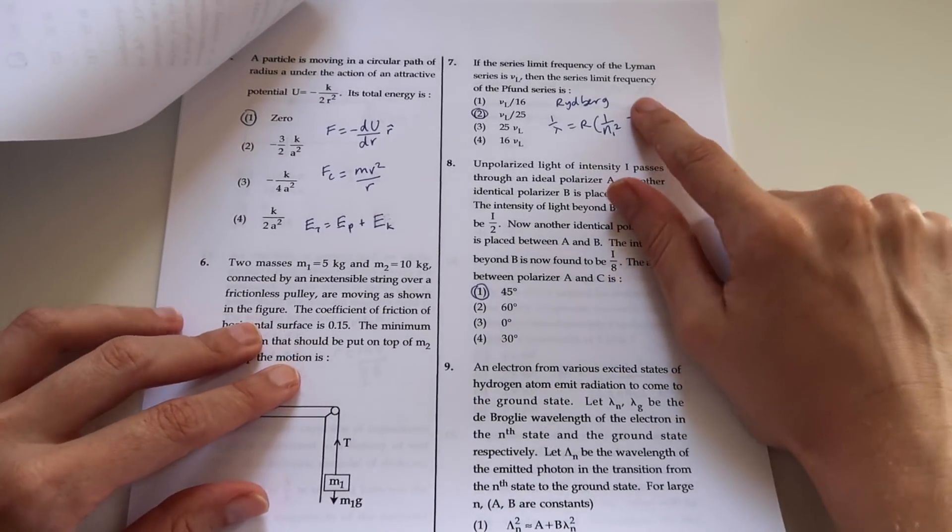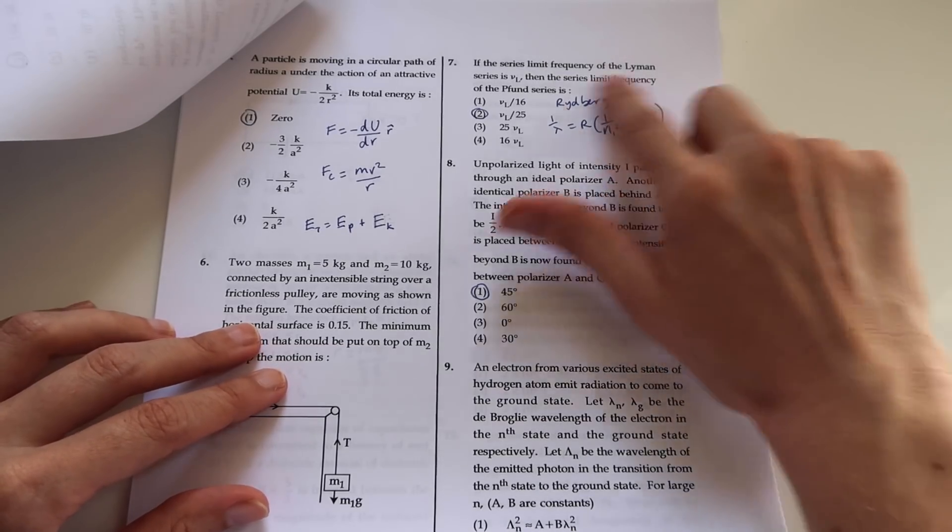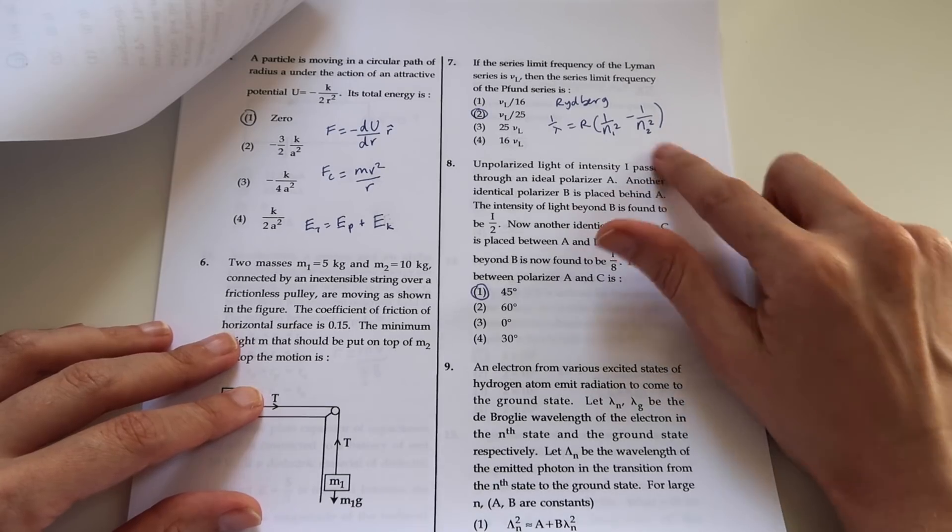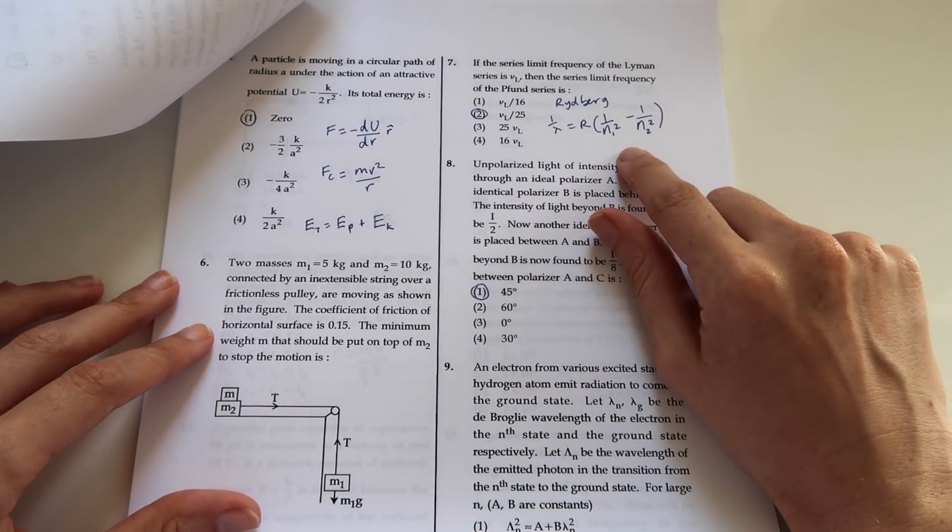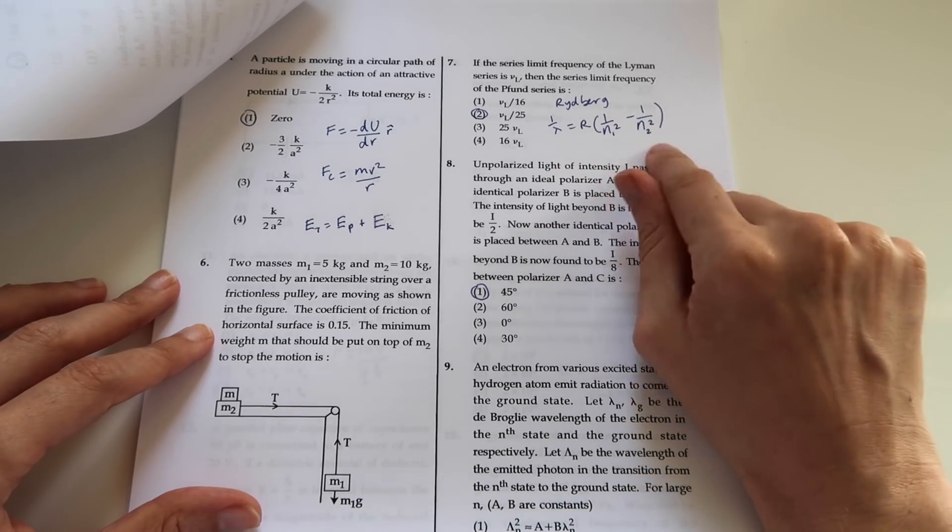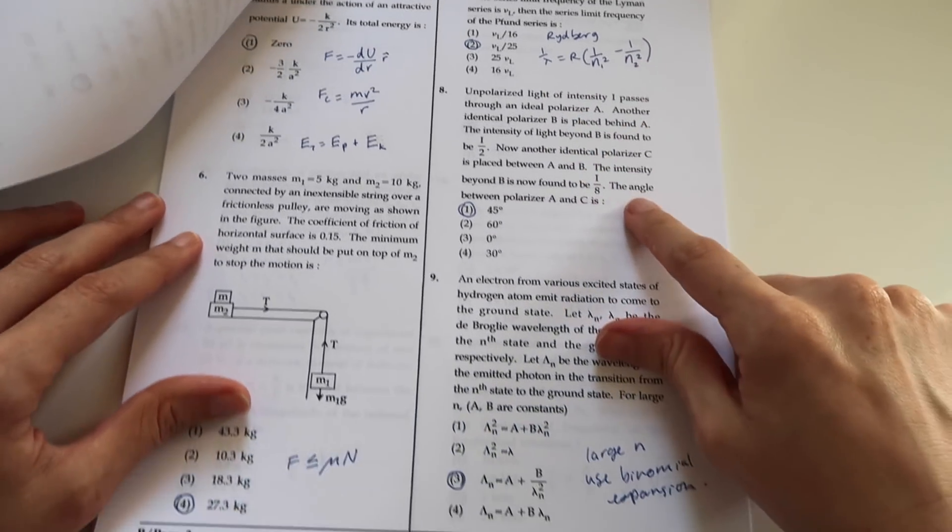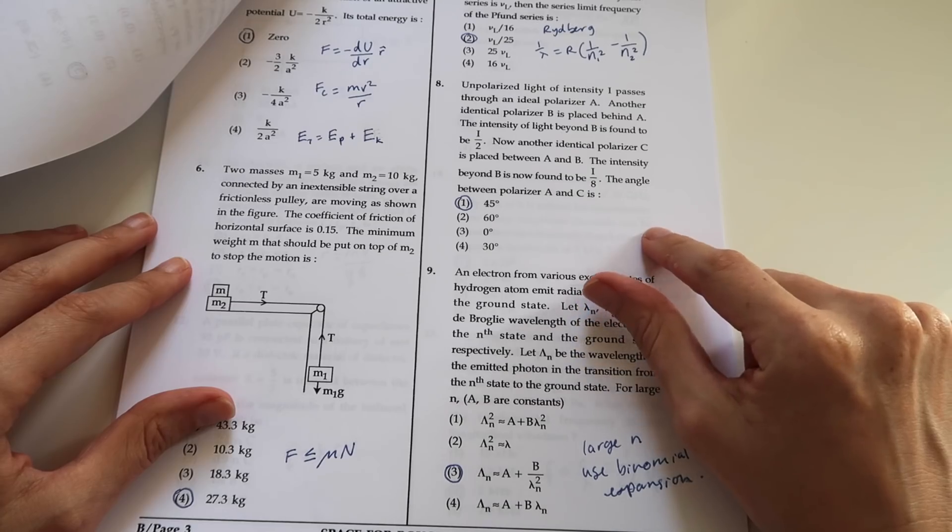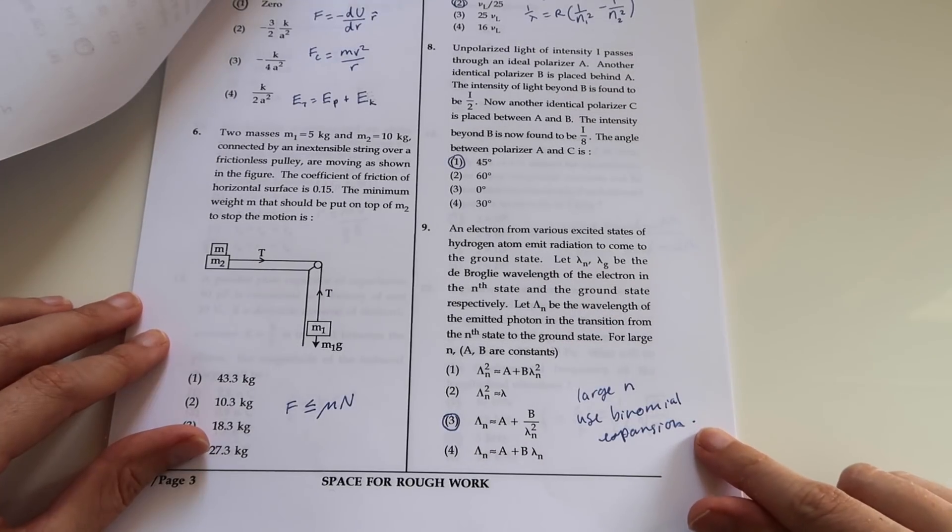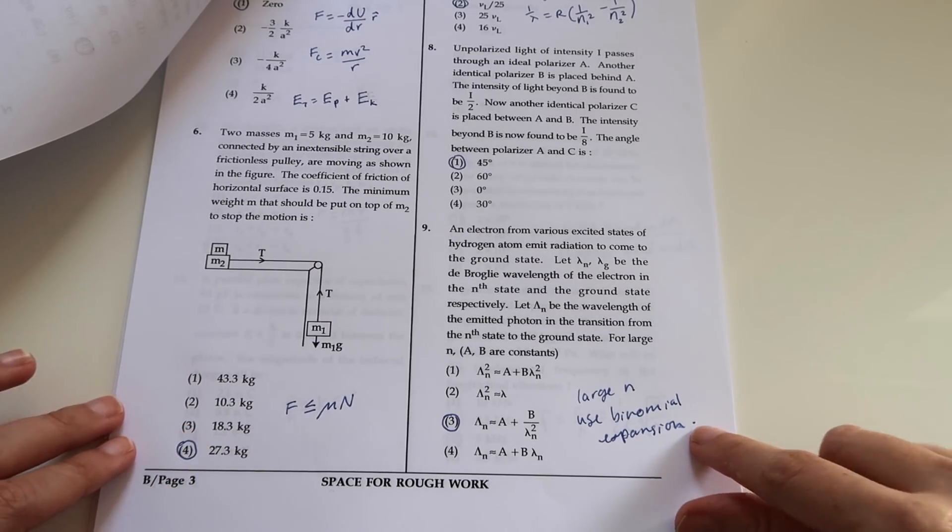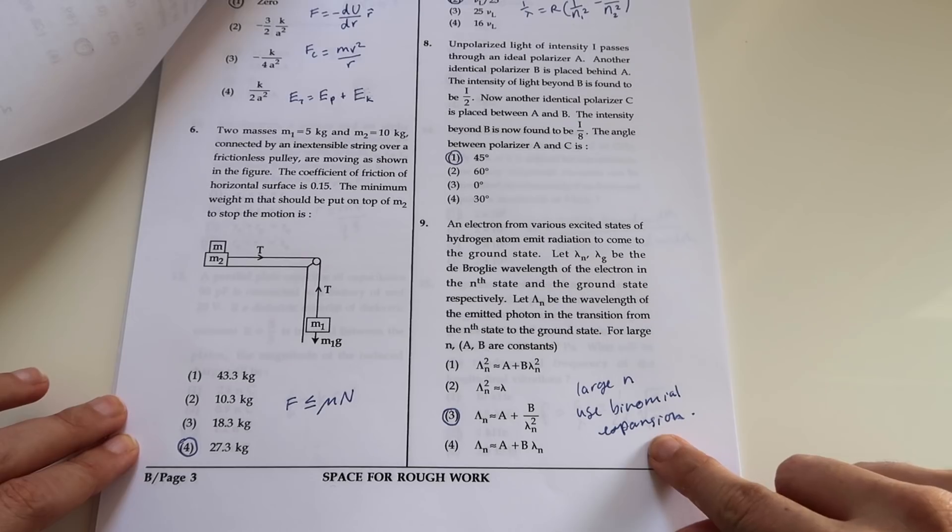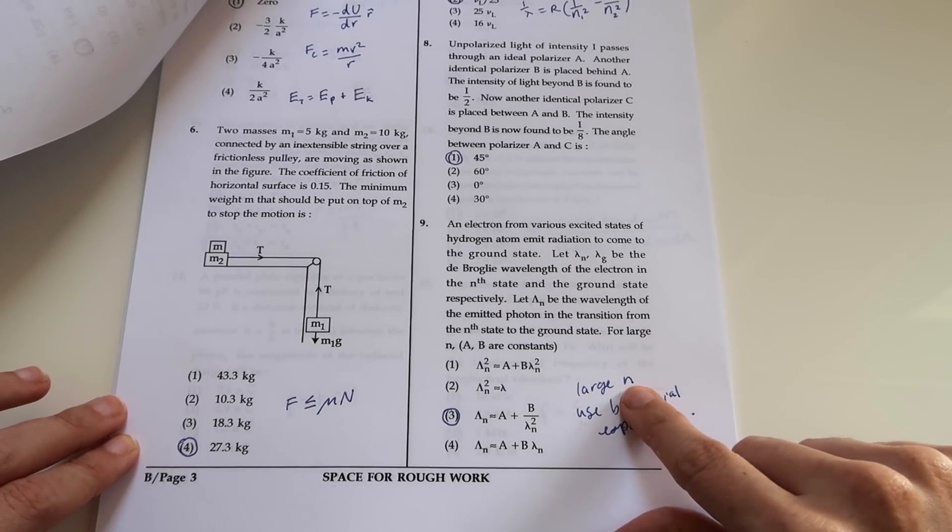Going on to question 7, we're dealing with modern physics as it's still classed on the syllabus and dealing with atoms. I think we're probably going to need to do some manipulation of the Rydberg equation here, so I've got that written there. Number 8 is waves and optics, so dealing with polarizing filters. Question 9, another problem about modern physics and atoms. You're going to need to, in this question, use the binomial expansion because you're dealing with large values of n.